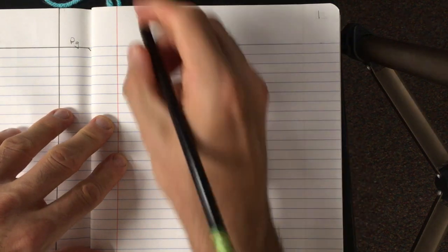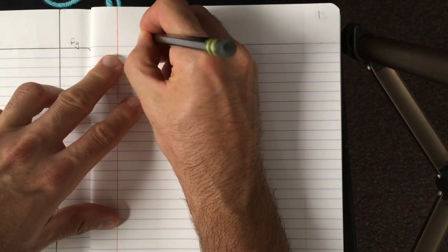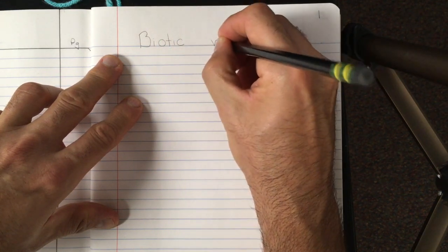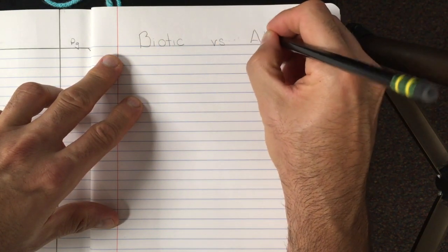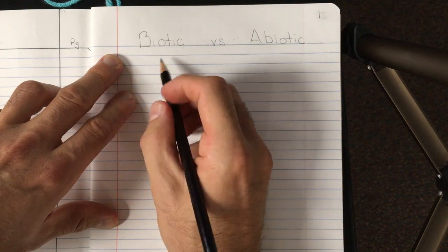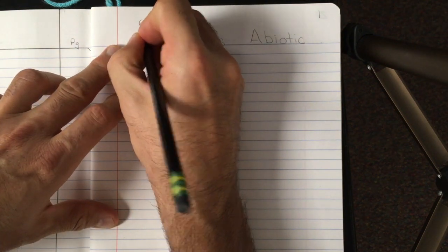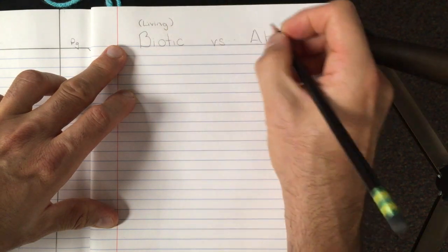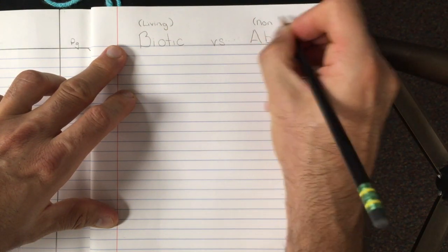Hello class, welcome to today's assignment: Biotic vs. Abiotic. We'll start by identifying the next available page in your science notebook, which should be page number one. At the very top, on the blue line, you're going to write the topic, which is Biotic vs. Abiotic. To remind ourselves what each of those words mean, right above it in parentheses, we're going to write what they mean. Biotic are all the living factors, and Abiotic are all the non-living factors of an ecosystem.